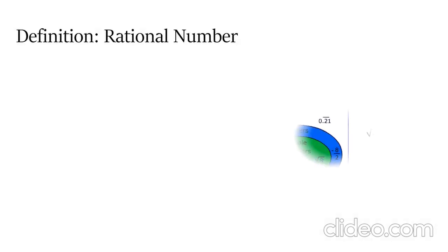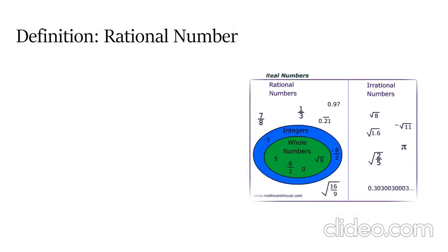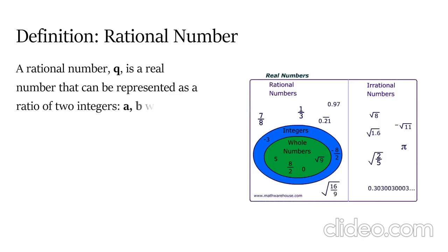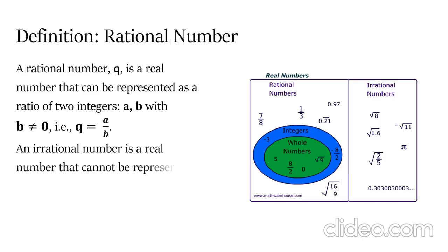Let's start with a definition: What is a rational number? A rational number q is a real number that can be represented as a ratio of two integers a and b, with b non-zero, also known as q equals a divided by b. An irrational number is a real number that cannot be represented as such a ratio.